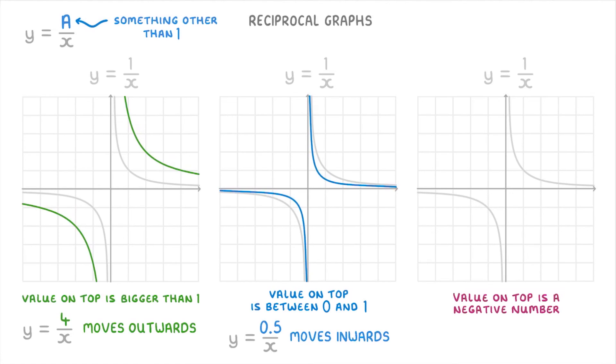And finally, if the value on top is negative, like with minus 1 over x, then it will swap quadrants, so that it's in the top left and bottom right instead.